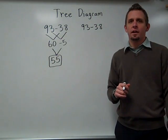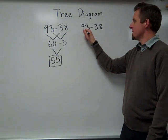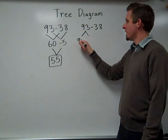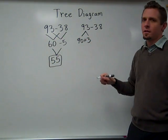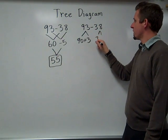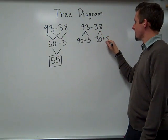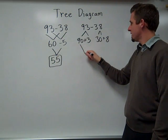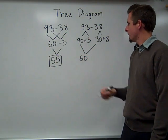Another way to use a tree diagram with decomposing might be something like this. I can decompose the 93 into a 90 plus 3, and the 38 into a 30 plus 8.